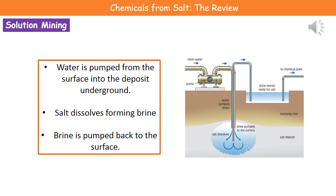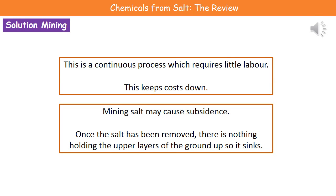One way we can get salt out from underground is through a process called solution mining. On the surface we have a pump that pumps water down into our underground deposit. As the salt comes into contact with the water, it dissolves, and we end up with a solution called brine, which is a very concentrated salt solution. Once we've got our brine, we pump it back to the surface and store it until it's ready for use. One of the good things about solution mining is that it's a continuous process requiring very little labour, which keeps the costs right down.